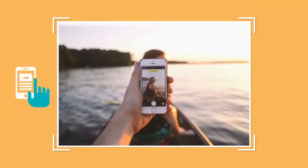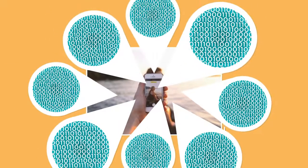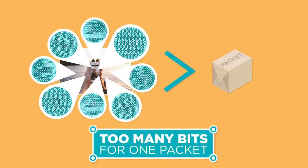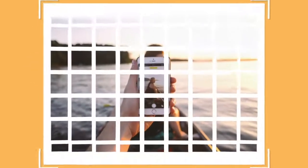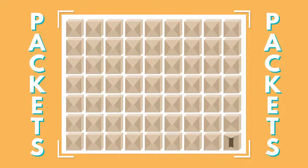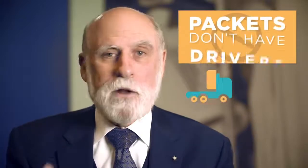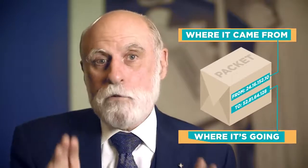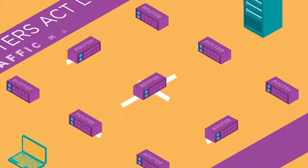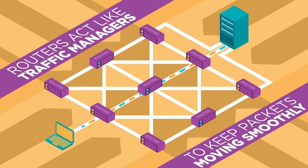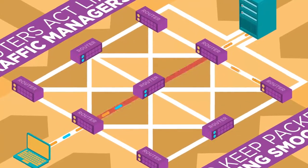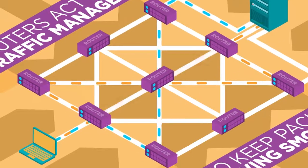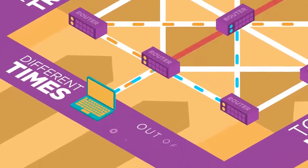On the internet, the details work similarly. If you have a very large image that you want to send to a friend or upload to a website, that image might be made up of tens of millions of bits or ones and zeros, too many to send along in one packet. Since it's data on a computer, the computer sending the image can quickly break it into hundreds or even thousands of smaller parts called packets. Unlike cars or trucks, these packets don't have drivers and they don't choose their route. Each packet has the internet address of where it came from and where it's going. Special computers on the internet called routers act like traffic managers to keep the packets moving through the networks smoothly. If one route is congested, individual packets may travel different routes through the internet and they may arrive at the destination at slightly different times or even out of order.